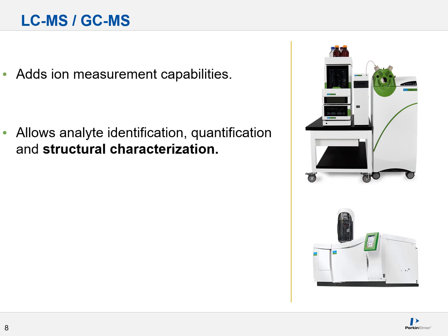Using an MS adds ion measurement capabilities. Once mated to an HPLC or GC, this combination allows you to not just identify and quantify what you have, but to actually get deep and identify the chemical structure of your target analyte. This is done by measuring ions.